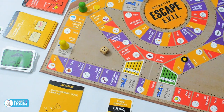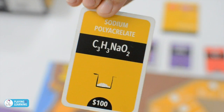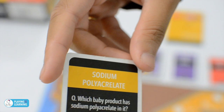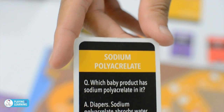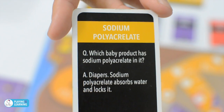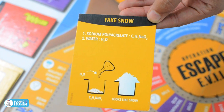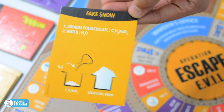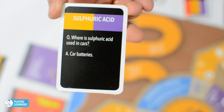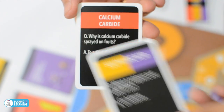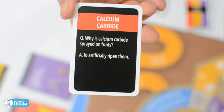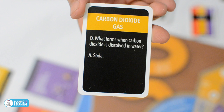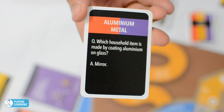That player has to pay based on whether or not he can answer the question written behind the chemical card. Which baby product has sodium polyacrylate in it? The answer is diapers. Remember the chemical's property to absorb water? Suddenly the complex-sounding chemical became something you can relate to easily. That is what the game is about. Players end up realizing that chemistry is not just imaginary chemicals with complex formulas and reactions, but a lot more real, and many things in our everyday lives involve several such fascinating chemicals.